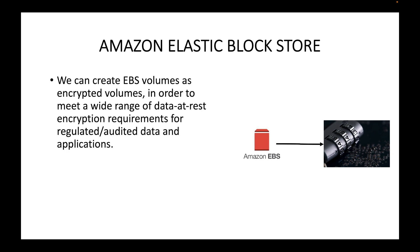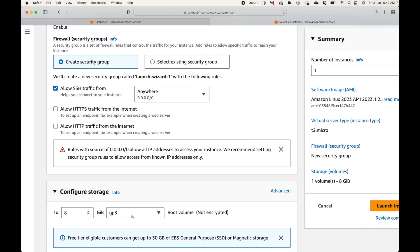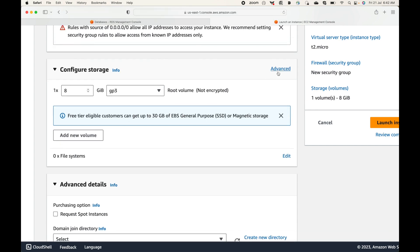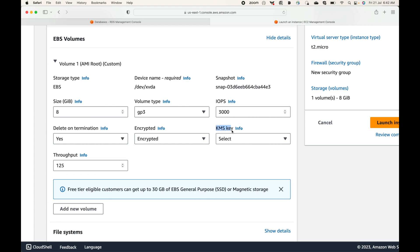KMS — Key Management Service — can be used for a wide variety of use cases such as encryption of data at rest or for regulated and audited applications. If regulatory or auditing requirements mandate encrypting your data, EBS supports that. In the Advanced settings during instance launch, you can see the 'Encrypted' option. By default it is not encrypted, but you can enable it using the KMS service.